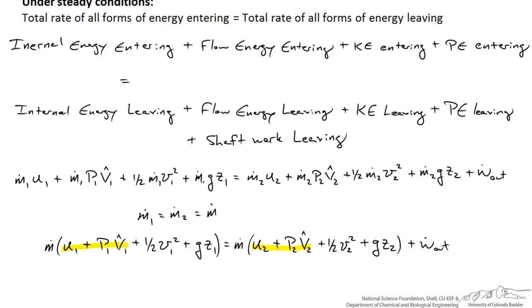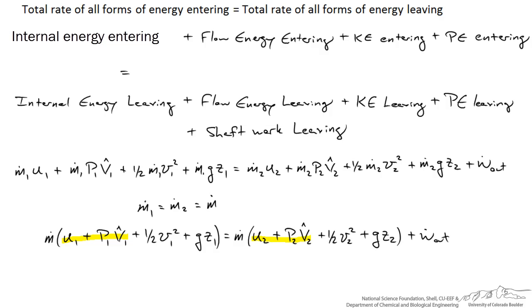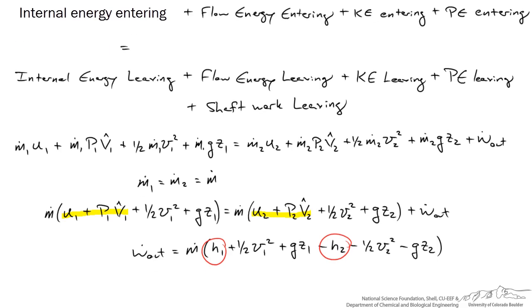So I'm going to solve for W out now and make that substitution for h. An assumption we can often make is that these terms h1 and h2 are usually fairly large compared to the kinetic and potential energy differences. They're so large in fact that it may only make a percent or two difference. If we're trying to calculate W out, we might get by by just saying W out equals the mass flow rate through the turbine times the enthalpy of the stream entering minus h2.